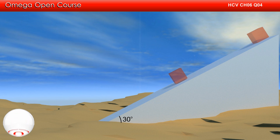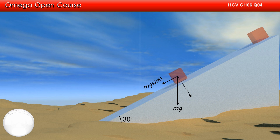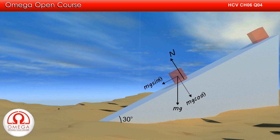Now let us draw the free body diagram of the block. The gravitational force mg is acting in the vertically downward direction. The component of gravity along the incline is mg sin 30°, and perpendicular to the incline is mg cos 30°. The incline pushes the block perpendicularly with normal force N, and friction of magnitude mu times N is acting up along the incline.